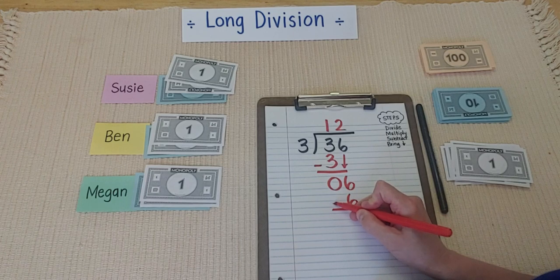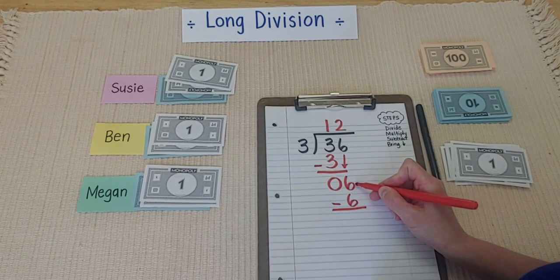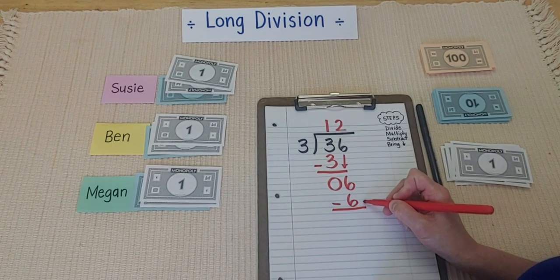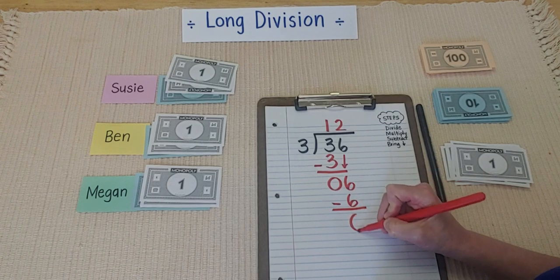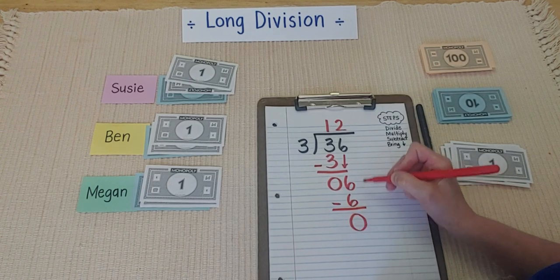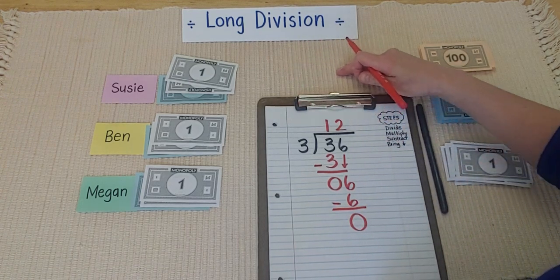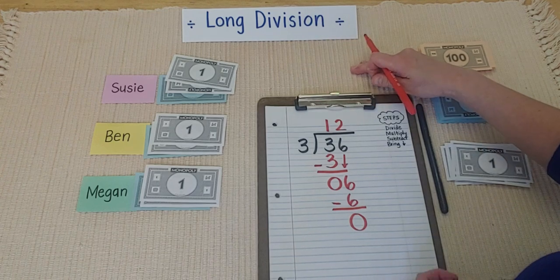And I'm going to subtract. I had six ones. And I used up all my six ones. So, six take away six is zero. I have zero cash left. And it actually matches up here. I have no more cash left.